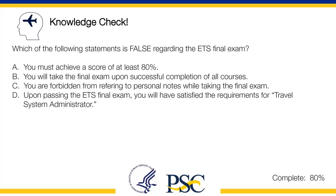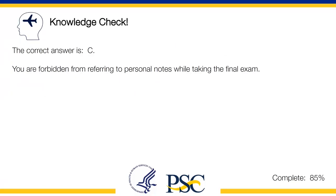Which of the following statements is false regarding the ETS final exam? A: You must achieve a score of at least 80%. B: You will take the final exam upon successful completion of all courses. C: You are forbidden from referring to personal notes while taking the final exam. D: Upon passing the ETS final exam, you will have satisfied the requirements for Travel System Administrator. The correct answer is C — you are forbidden from referring to personal notes while taking the final exam. This is a false statement.